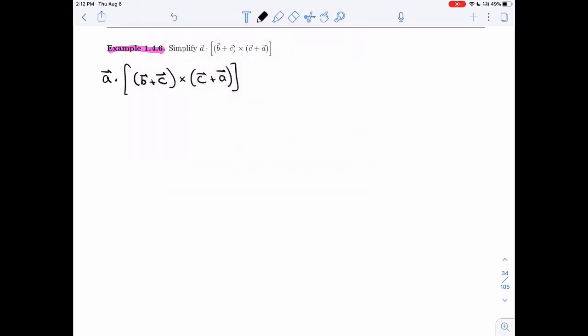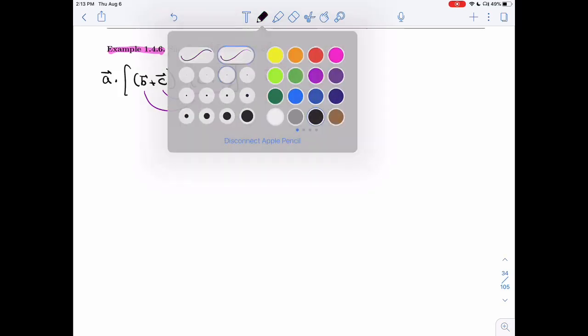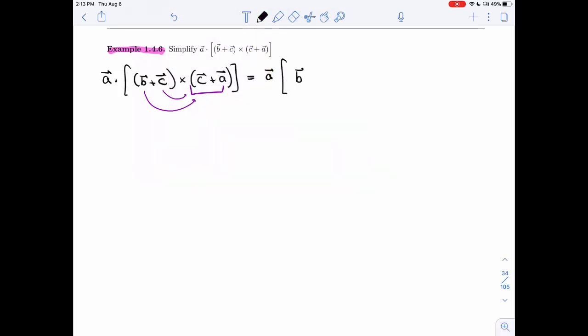So what I will do is I would expand this right here, which is inside the square bracket. So I'll leave the a alone up front. I'll do it carefully. So I'm going to take this as one vector, and I'm going to distribute B and C on it. So I will get B cross C plus A plus C cross C plus A. And then I'm going to distribute again on the other sum.